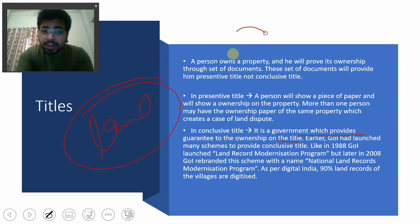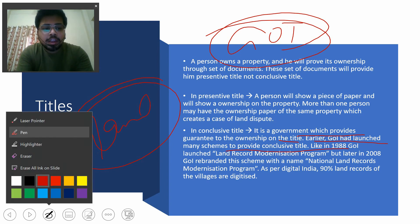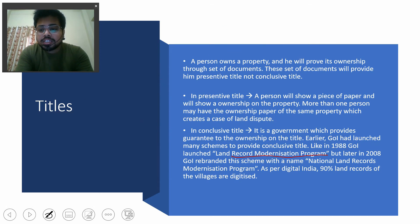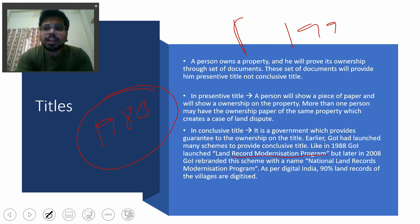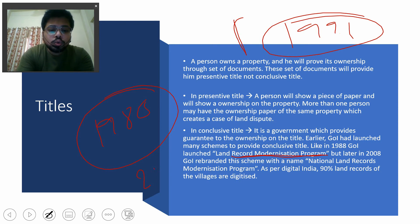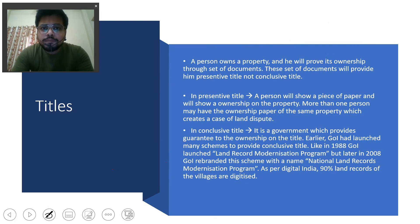The government of India has taken many steps regarding this. Earlier, in 1988, the government launched the Land Record Modernization Program. Later, in 2008, it was relaunched as the National Land Record Modernization Program. The objective was to resolve land dispute issues so that people would have a conclusive title.